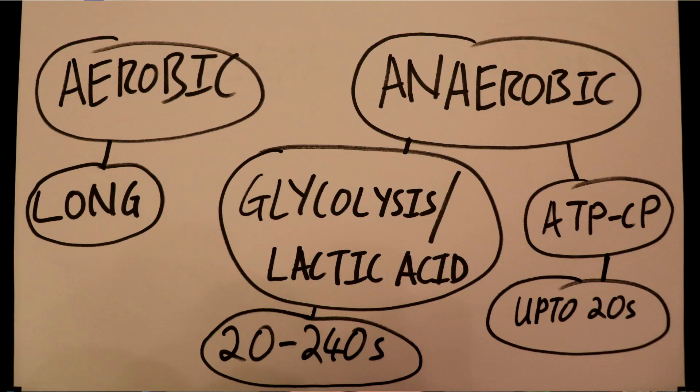The major differences between those are the length of time they're going to provide energy to the muscles. The glycolysis and lactic acid system provides energy to the muscles for around about 20 to 240 seconds, and these systems are used in events such as the 400 or 800 metres in athletics.